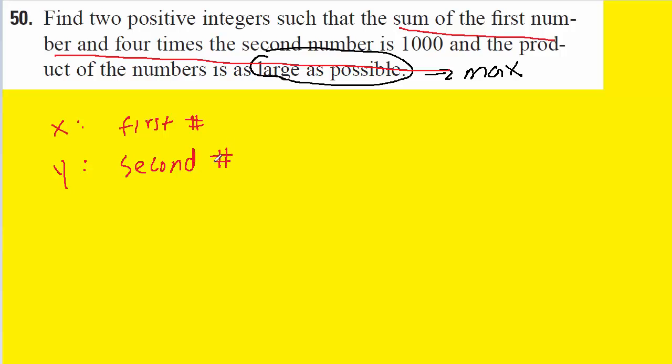All we have to do is translate what we underlined into an equation. It says the sum of the first number and four times the second number, so that would be x plus 4y equals 1,000. We refer to this as the constraint equation because the sum of these two numbers is constrained to be 1,000.